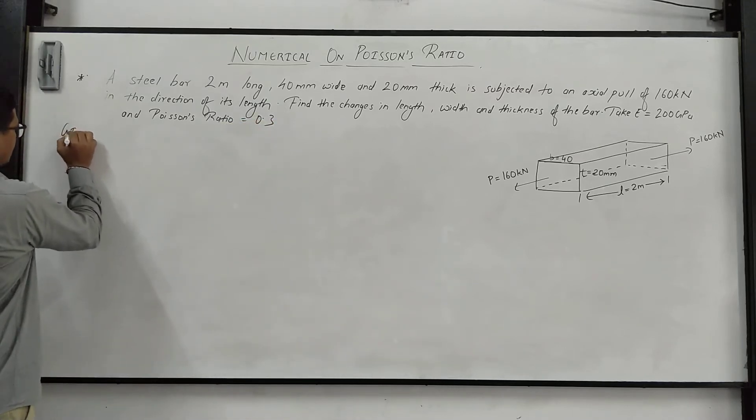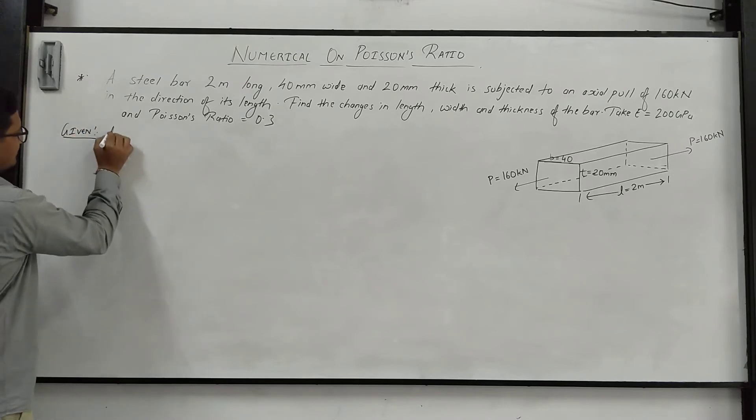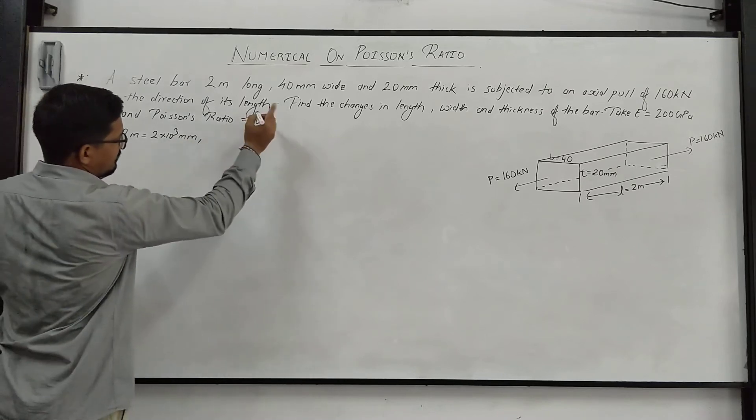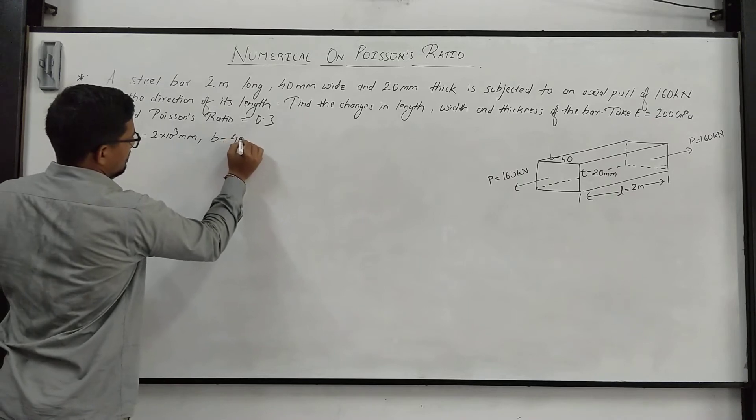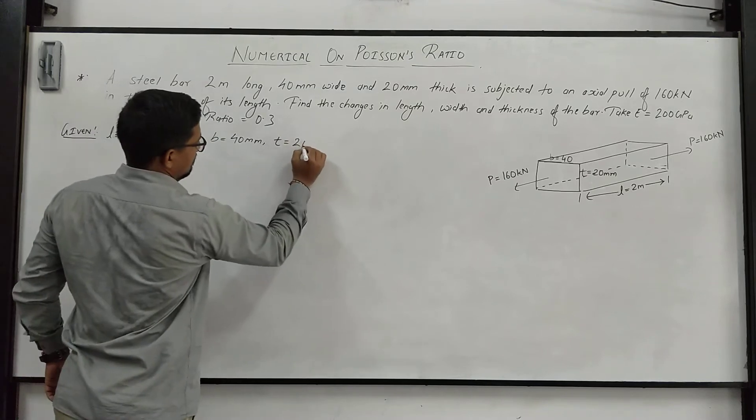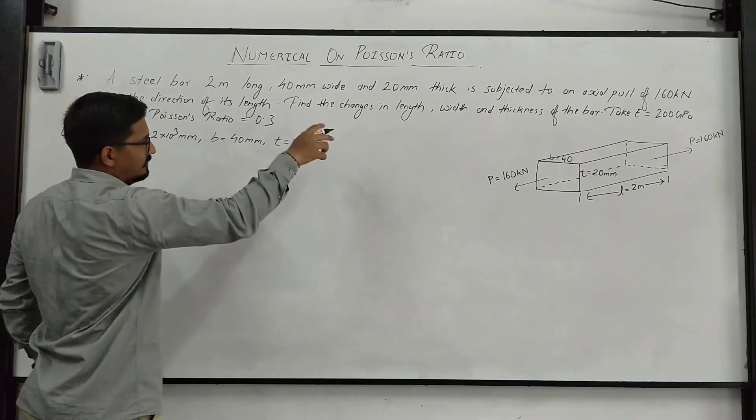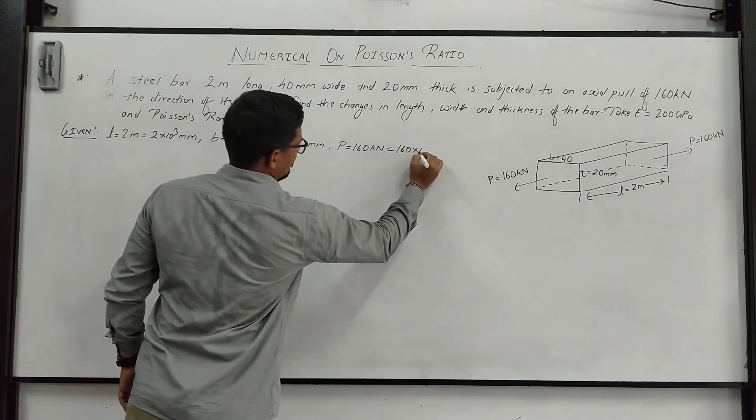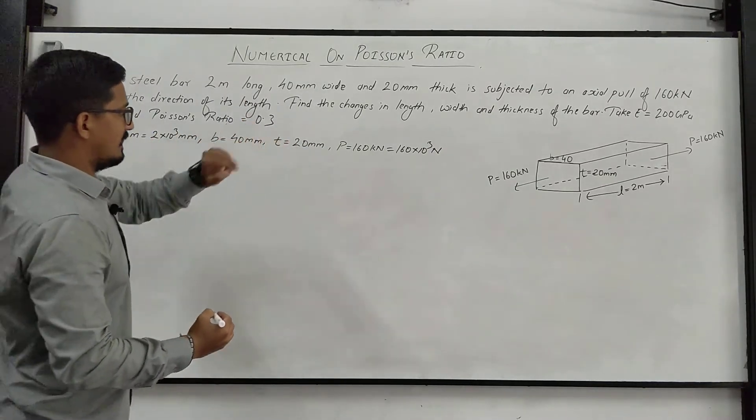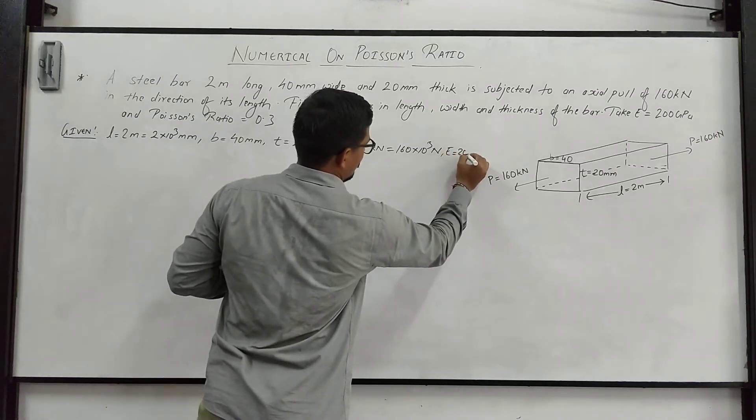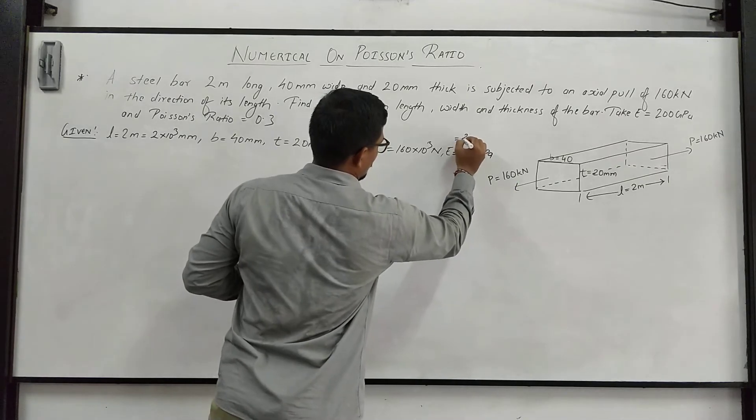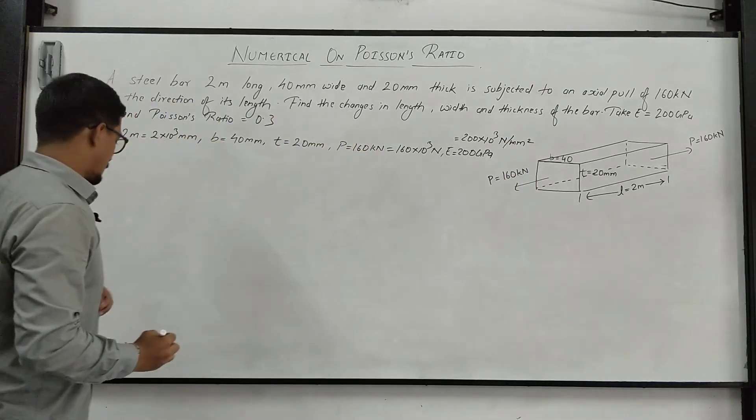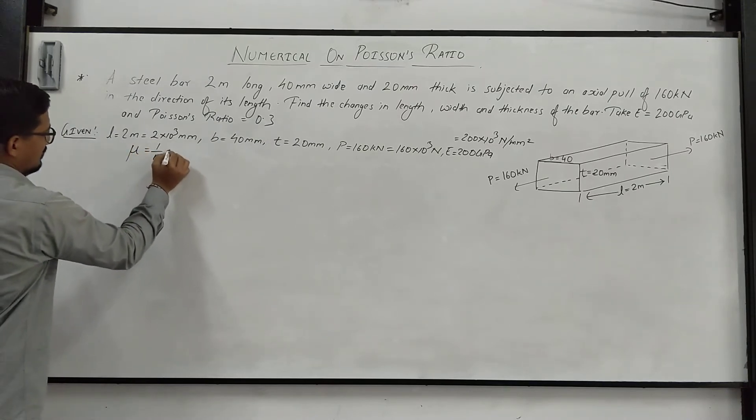Given part we can write here. Length is given, first of all 2 meter, we can convert this into 2 into 10 raise to 3 mm. Width is given 40 mm. Thickness is given as 20 mm. Thickness can also be written as depth D. Axial pull P, 160 kN, I can convert this into 160 into 10 raise to 3 newton. Then capital E, Young's modulus of elasticity for the bar material is given 200 GPa, we can convert this into 200 into 10 raise to 3 newton per mm square or MPa. And Poisson's ratio is also given, mu which is equal to 1 by small m is equal to 0.3.